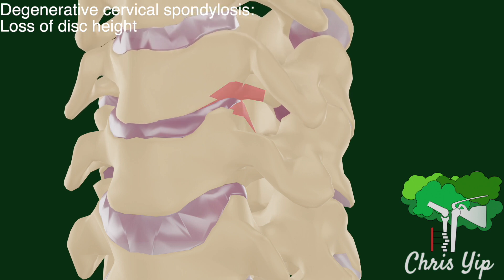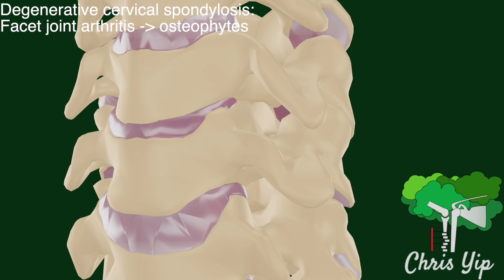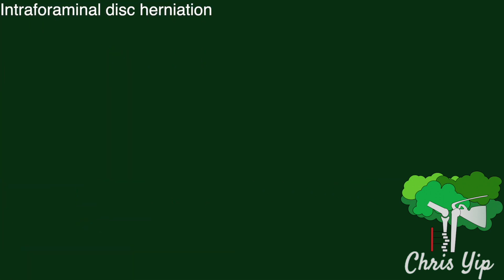This leads to the formation of osteophytes, which can be referred to as the disco-osteophyte complex, narrowing the intervertebral foramen. Arthritis of the facet joints can also lead to the formation of osteophytes, also narrowing the foramen. There can also be disc herniation.